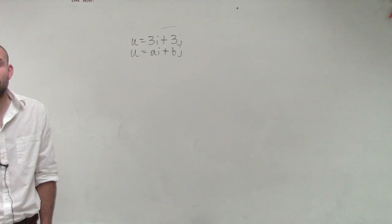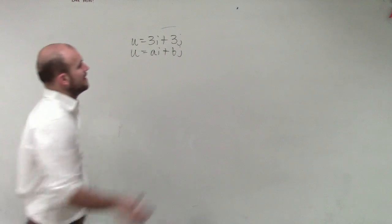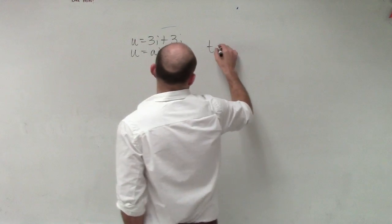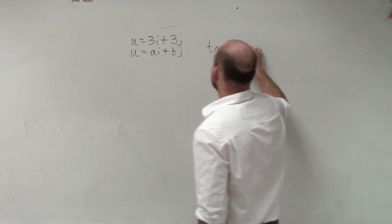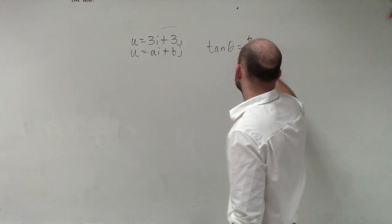Then if I want to go and find the directional angle, then what I can just do is say tangent of theta is going to equal b over a.